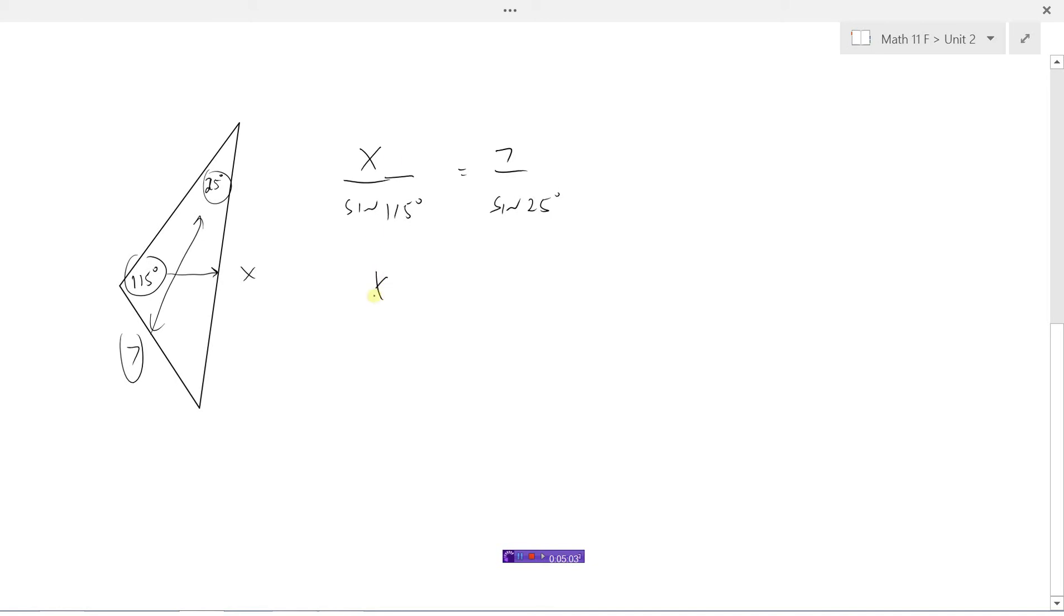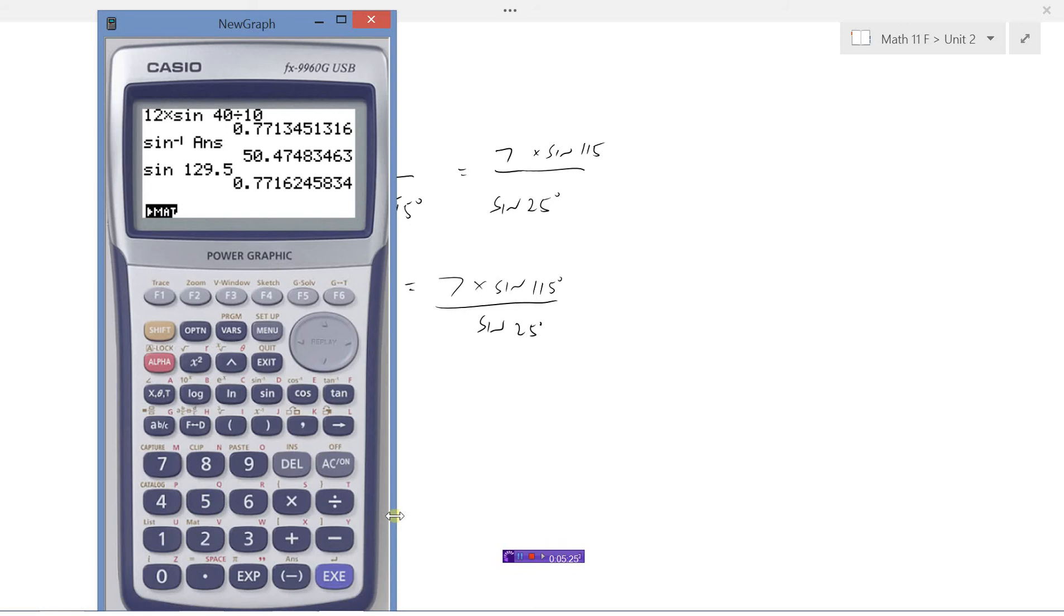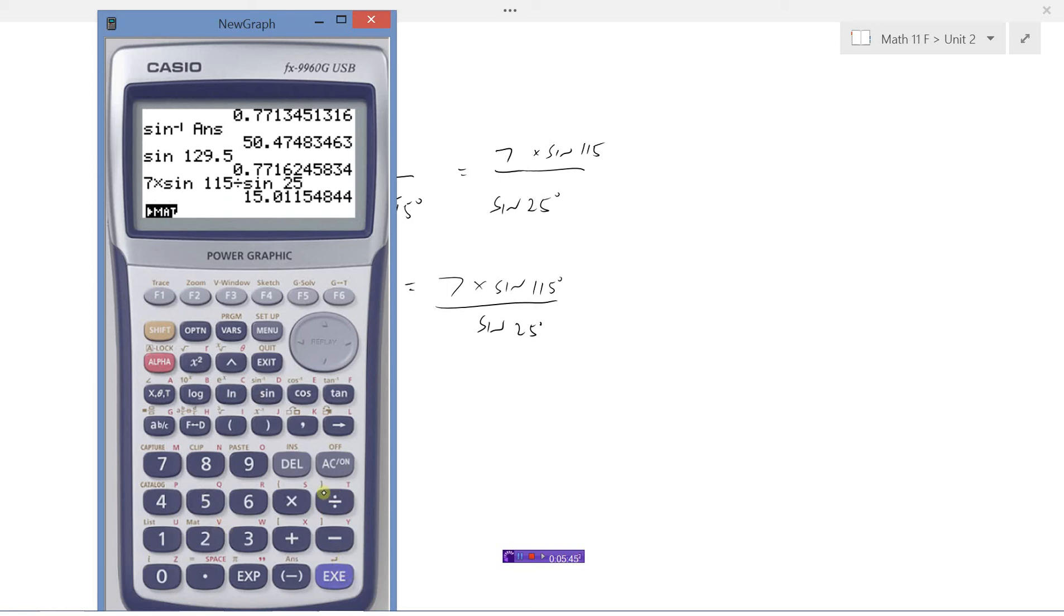So here to isolate x, I would just need to multiply both sides by sine of 115 degrees. Multiply this side by sine 115, so that's 7 times the sine of 115 degrees divided by the sine of 25 degrees. Now there's no special consideration here that we need to take, because when we punch sine of 115, when we put in sine of an obtuse angle bigger than 90 degrees, it's going to give us the correct ratio. So it's just a matter of punching in sine 115 divided by sine 25, equals 15.01, or 15.0.